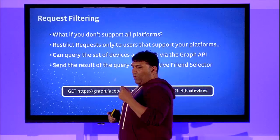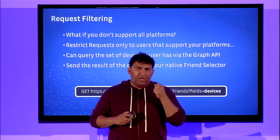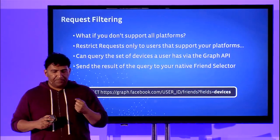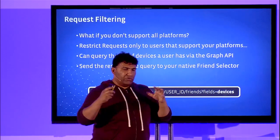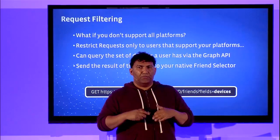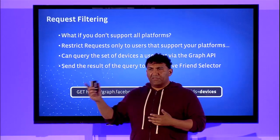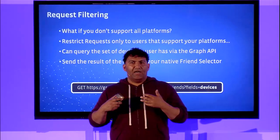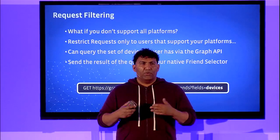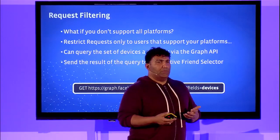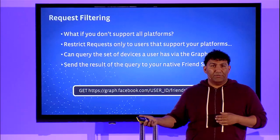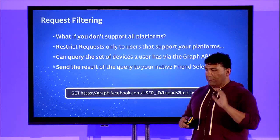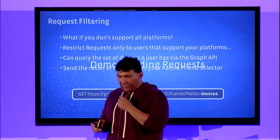The second concept is request filtering, where you can specify which friends will show up inside a particular dialogue box. You can restrict the users in the request dialogue to people who only qualify to certain criteria — probably the most common example being only showing friends that have devices on a certain platform. If you only have an iOS and Android version, you don't want to see people who only have a BlackBerry or Windows phone. You would then take the result of this query and send it to your friend selector.